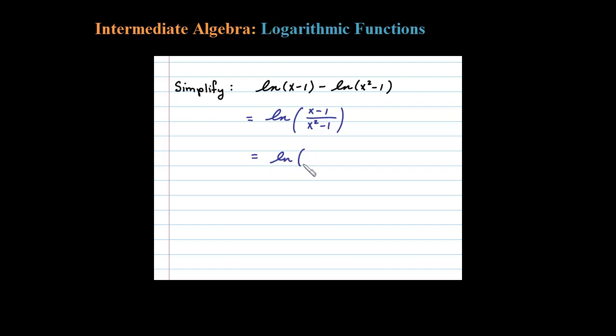It looks like we have difference of squares on the bottom. Let's go ahead and factor that. We have X minus 1 in the numerator and the denominator we have X plus 1 times X minus 1, difference of squares.